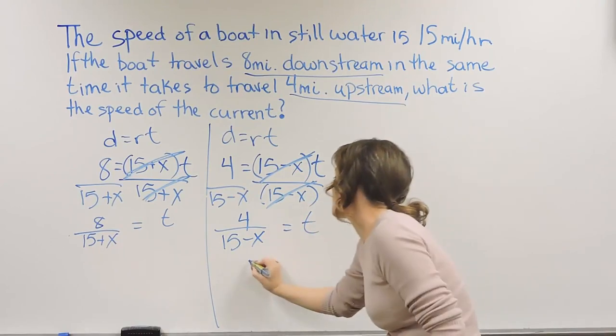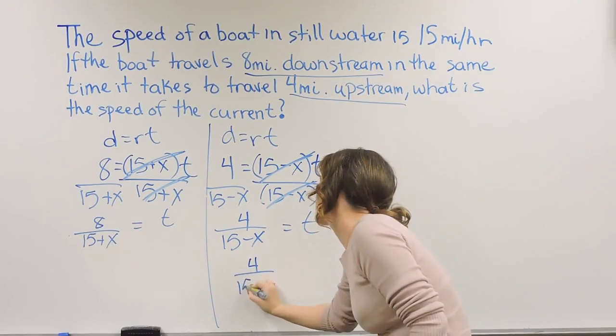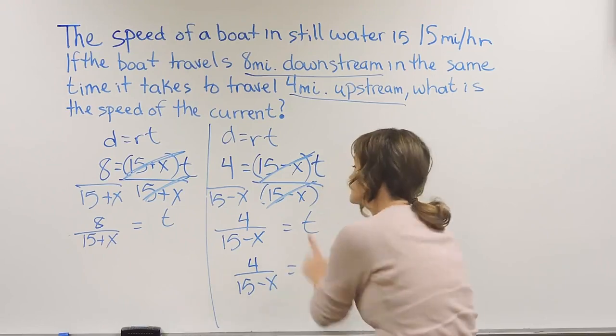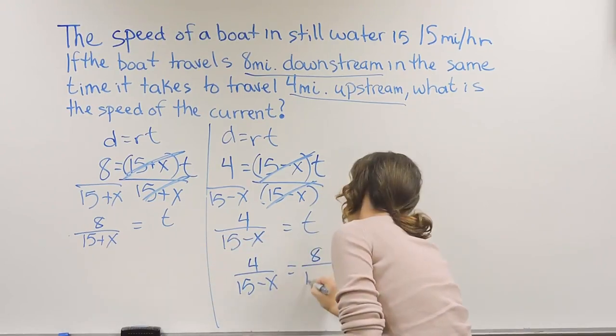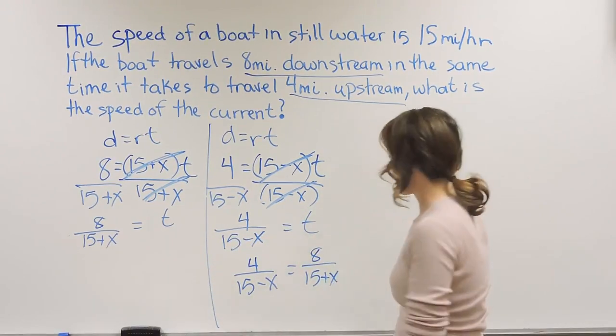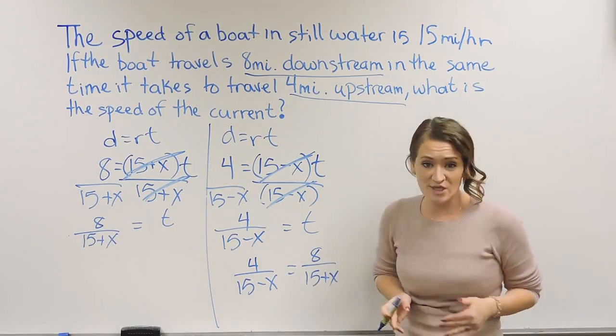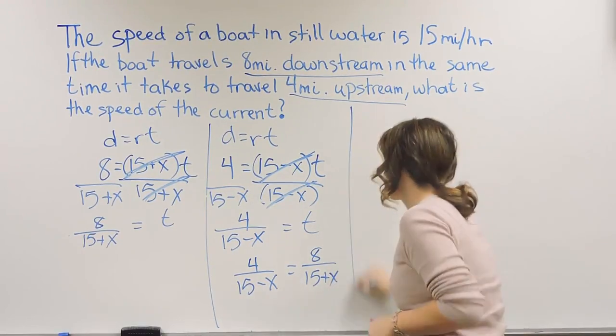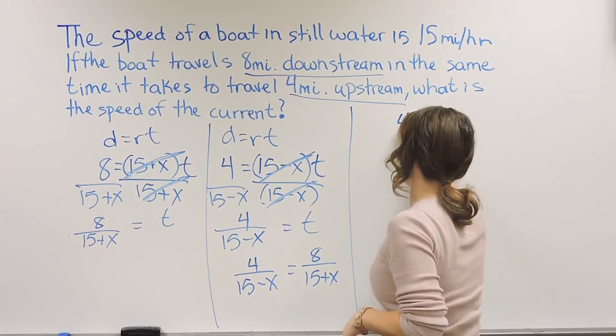So essentially that would look like this, 4 over 15 minus X is equal to 8 over 15 plus X. And this is the equation that we're going to want to solve. So over here I'm just going to rewrite that equation.